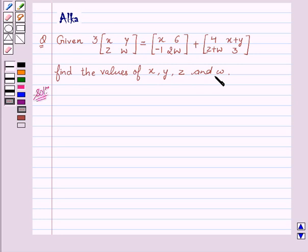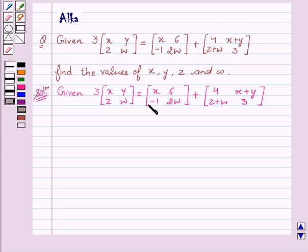Now let's start with the solution. We are given 3 times [x, y; z, w] equals [x, 6; -1, 2w] plus [4, x+y; z+w, 3].